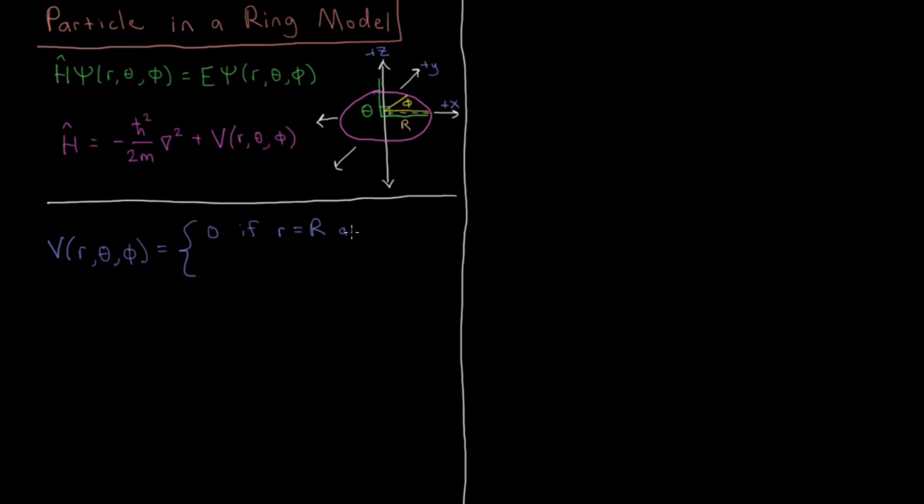So r equals R and theta, the azimuthal angle in green here, theta equals pi over 2 or 90 degrees. So under those two constraints that r is fixed and theta equals 90 degrees, what you get is this one dimensional ring here, you get a circle for your system there.